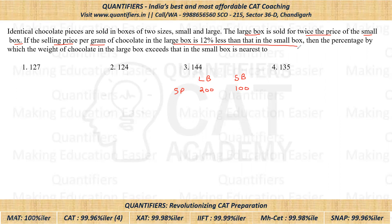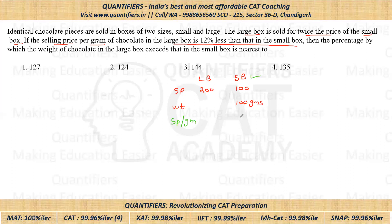What they are asking is the percentage by which the weight of chocolate in the large box exceeds that in the small box. So here what I'm assuming is the weight of the small box to be 100 grams. Because I have assumed the weight of the small box to be 100 grams, I can say that the selling price per gram in case of the small box would be 100 upon 100 — that means one rupee per gram. I hope this point is clear to everyone.